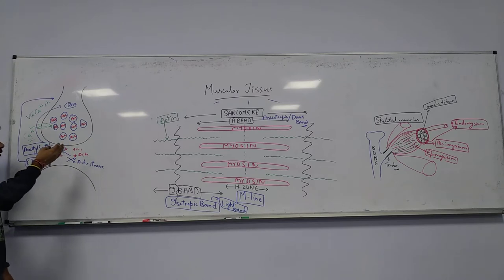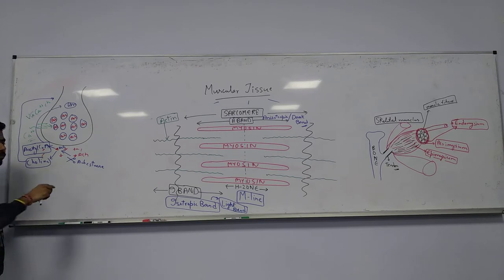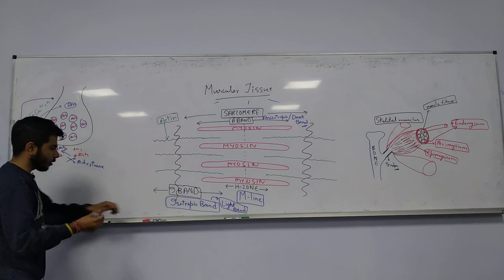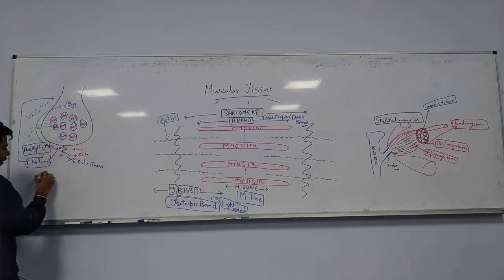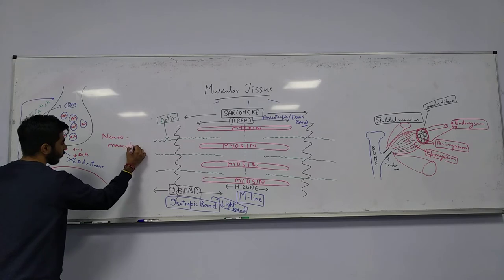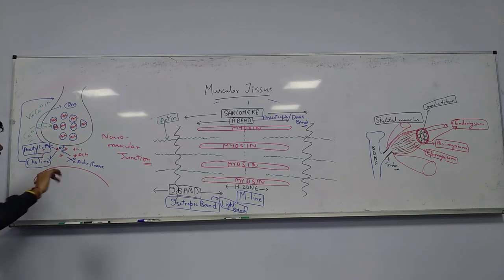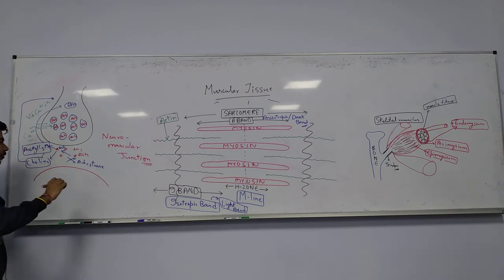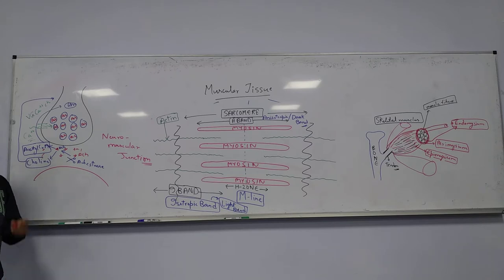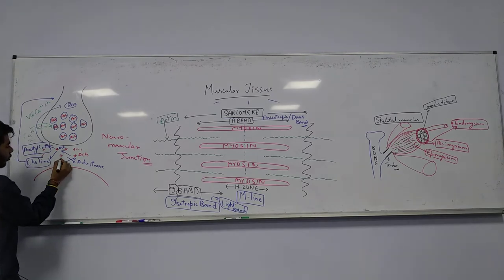With the help of calcium influx, acetylcholine comes into the synaptic gap. We are talking about the neuromuscular junction — the neuron is the source and the muscle is the target site. There will be receptors for acetylcholine on the muscle, and acetylcholine will bind to those receptors.